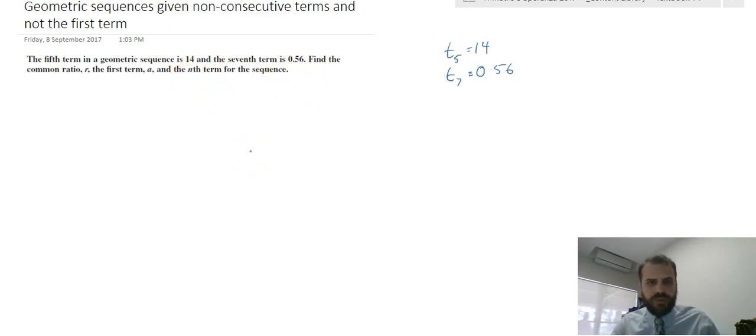So what this question really boils down to is doing simultaneous equations in most basic form. We know that tn equals ar to the n minus 1, that's a good starting point. Now we know that t5 equals 14, so 14 equals ar to the 5 minus 1, which is ar to the 4.